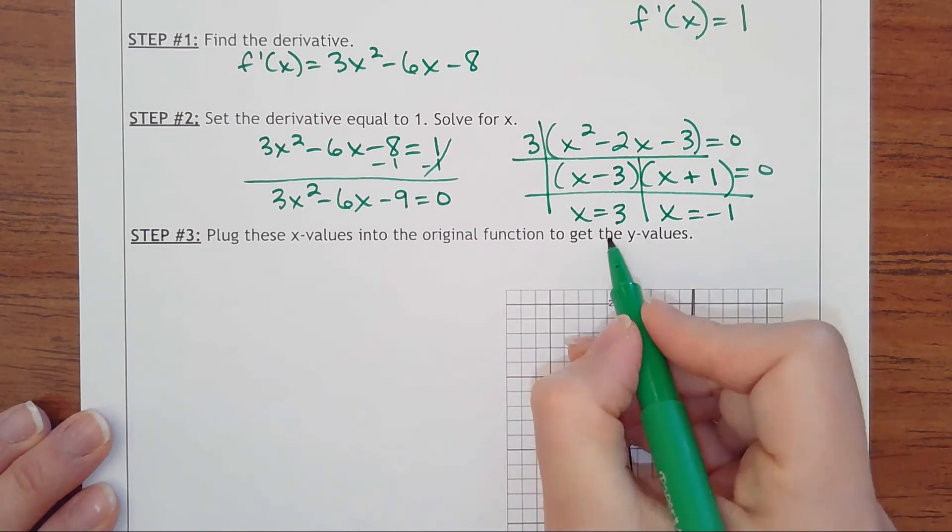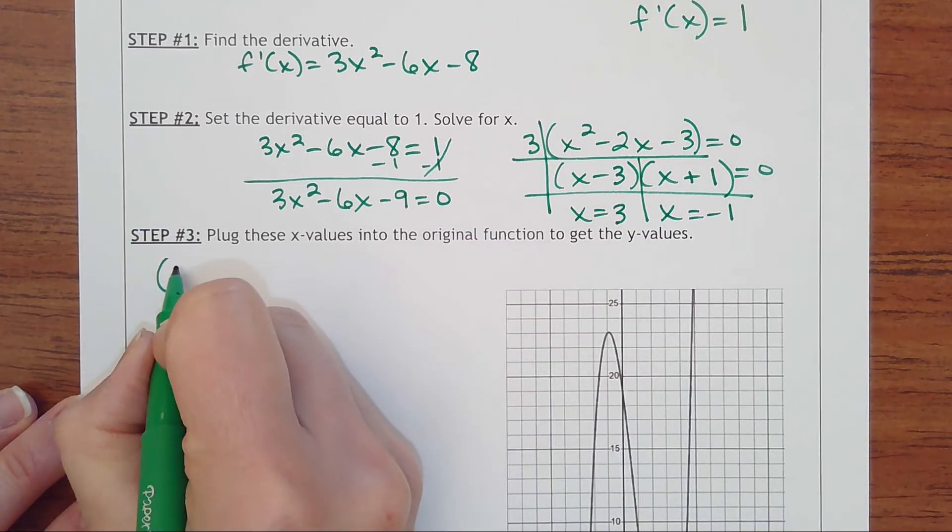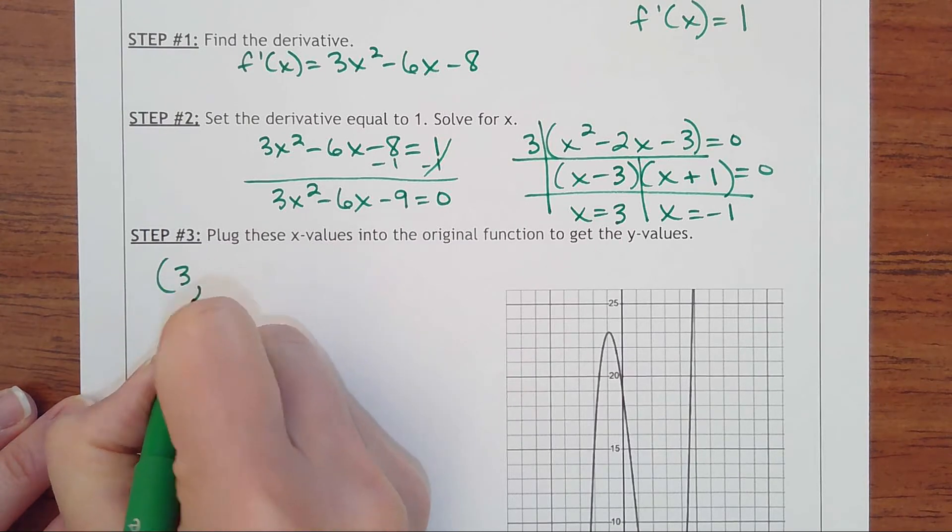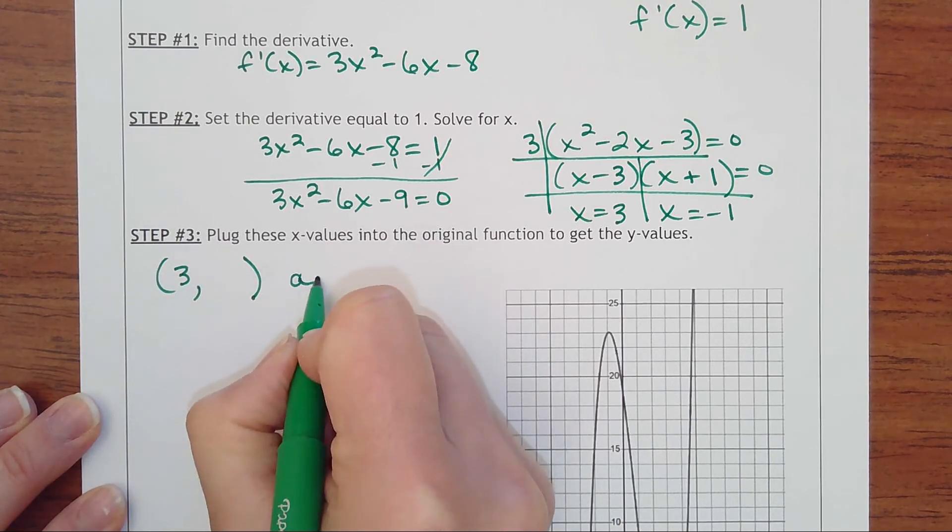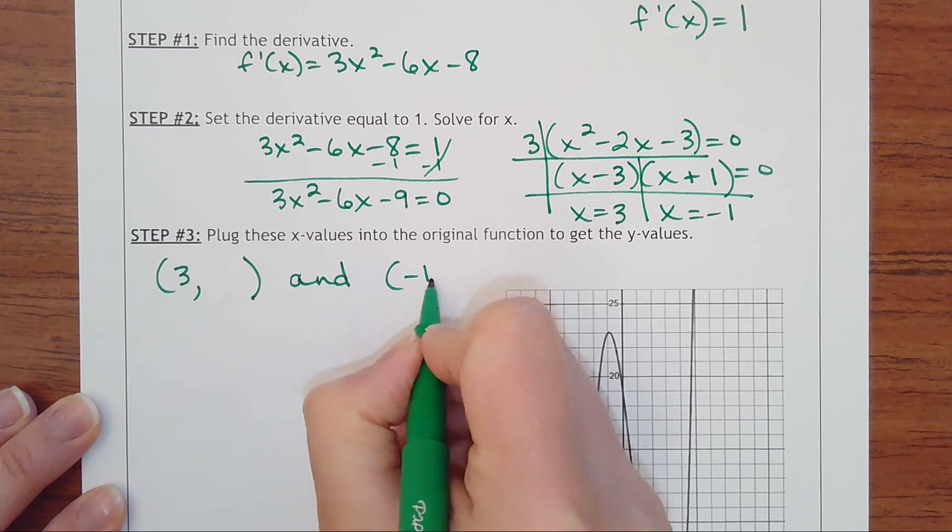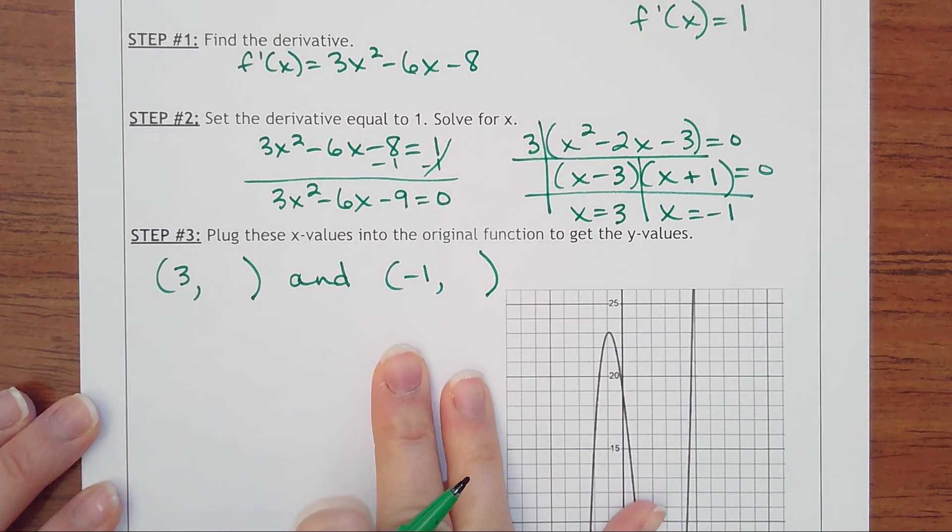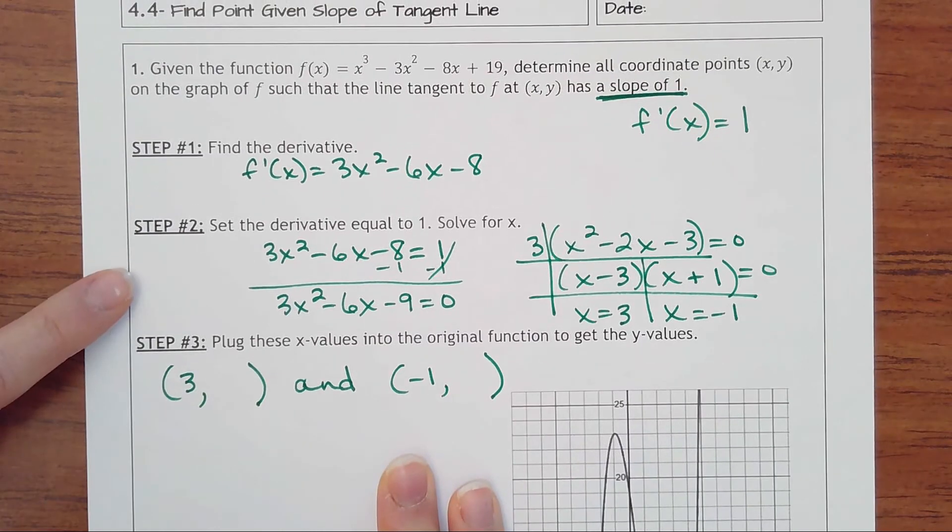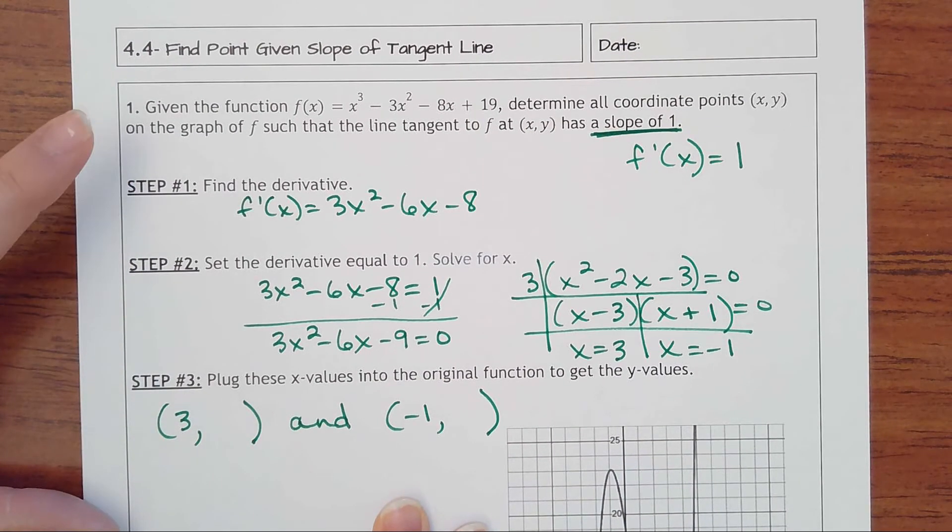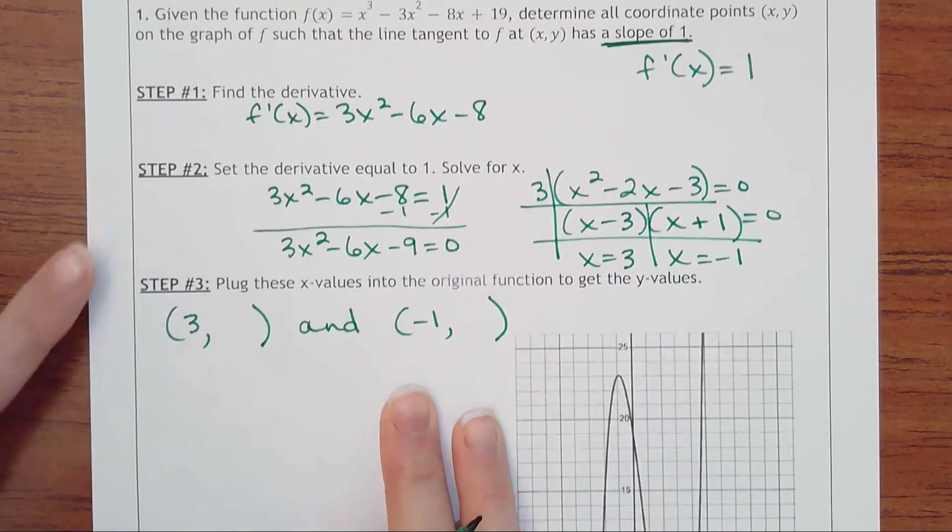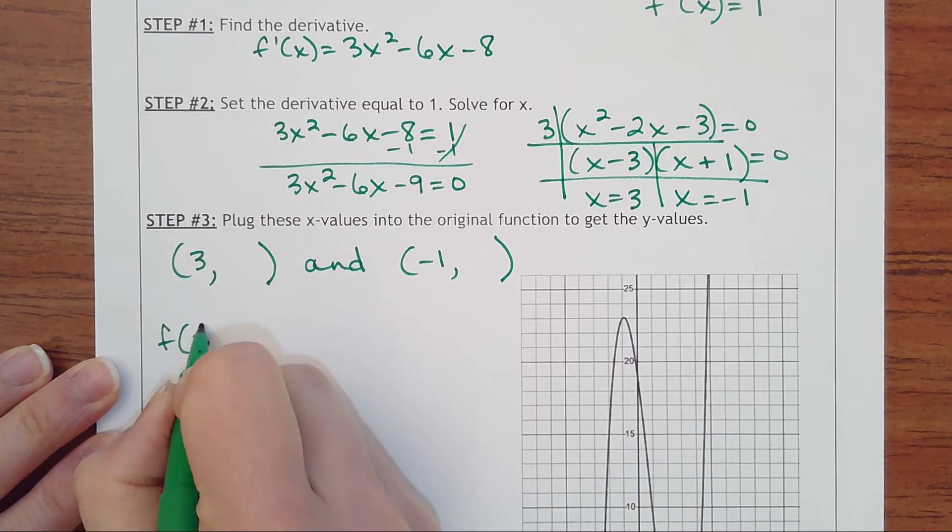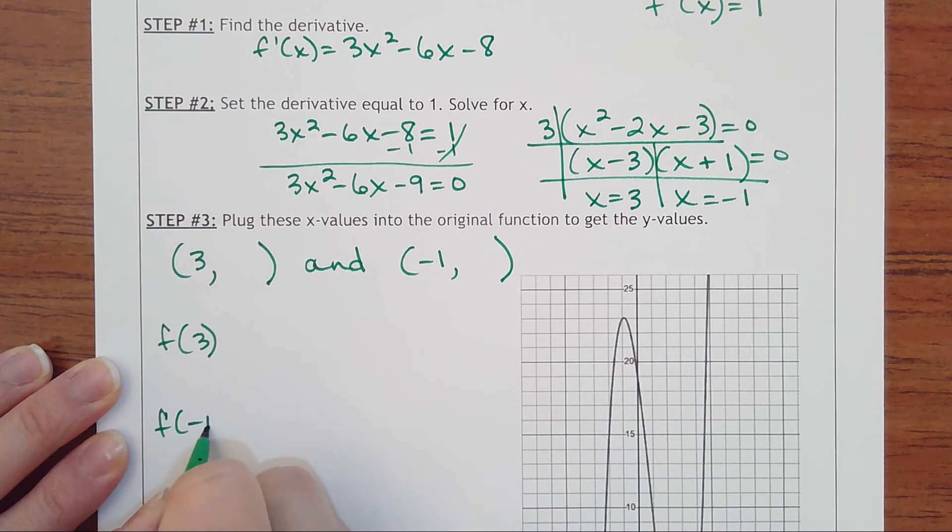I found the x-values, so let me set up my ordered pairs: (3, ?) and (-1, ?). Whenever you're wanting to get the points, you don't plug back into the derivative—you plug into the original function to get the y-values. So we'll find f(3) and f(-1).